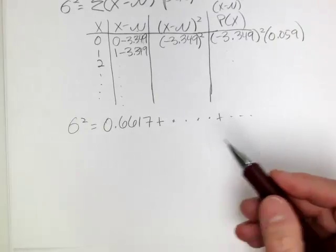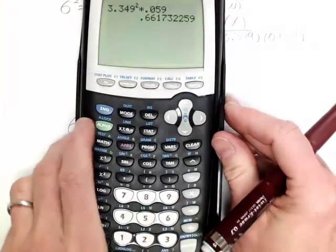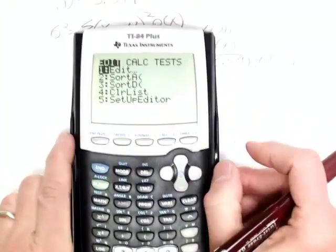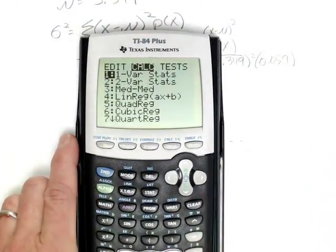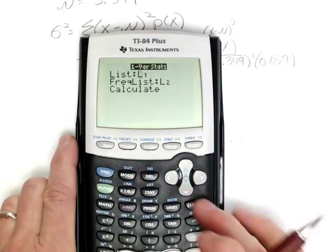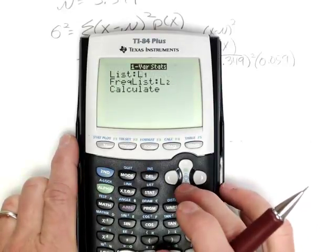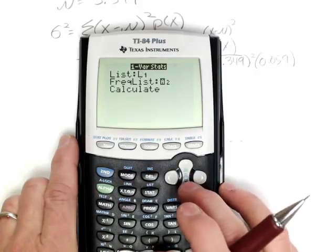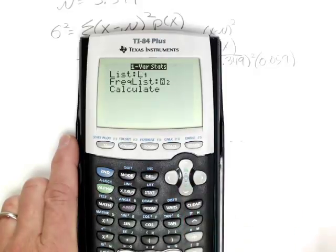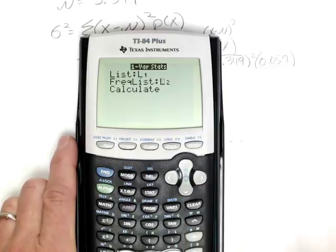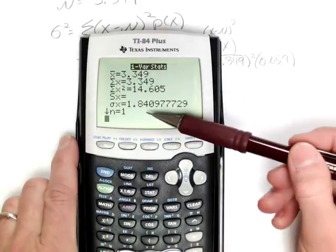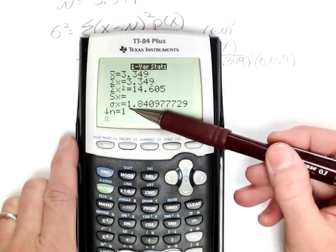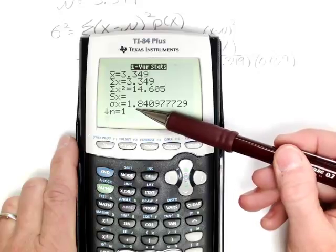Now fortunately, we can get this directly in our calculator. Again, let me go back to stat, and let's review the key sequence. I'm going to right arrow over to calc, select one variable statistics, and my x list is list 1, and my frequency list, which is my list of corresponding probabilities, is in list 2. Again, I'm going to calculate. Again, mu is 3.349, and the population standard deviation is about 1.84.